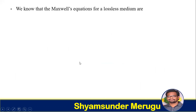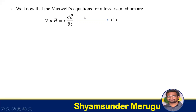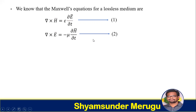We know that Maxwell's equations for a lossless medium are: del cross H bar equals epsilon times partial E bar over partial t — we consider this as equation 1. Del cross E bar equals minus mu times partial H bar over partial t — considering this as equation 2.